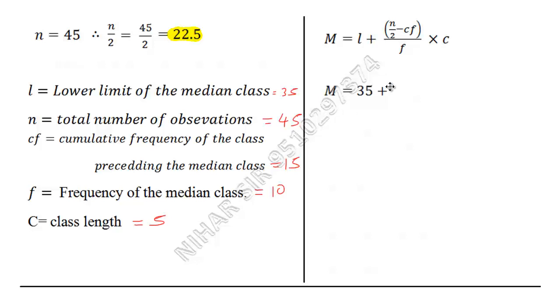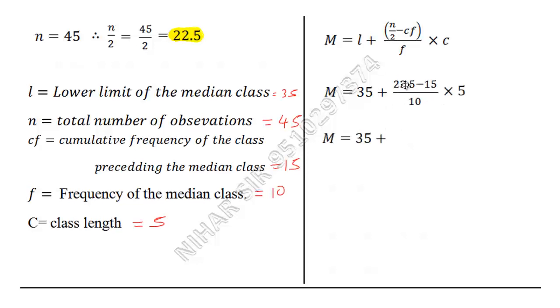So here, L is equal to 35, n upon 2 is 22.5, cf is 15, f is 10, c is 5. Very simple. 22.5 minus 15, that is 7.5 into this 5. So I took this 5 with this. 22.5 minus 15, 7.5 into 5 upon 10.